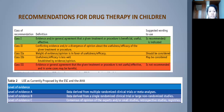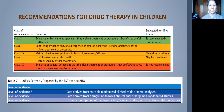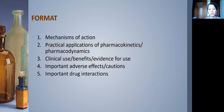For each class of recommendation we also need a level of evidence. Level A means data derived from multiple randomized clinical trials or meta-analyses. Level B means non-randomized studies or a single randomized controlled trial. Level C is consensus opinion of experts derived from retrospective or small studies. In pediatrics we mostly have level C or at best level B evidence.